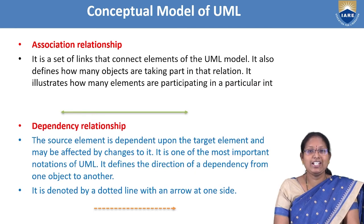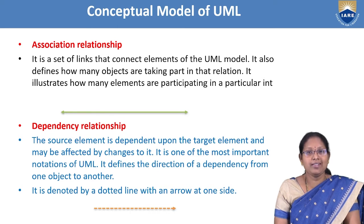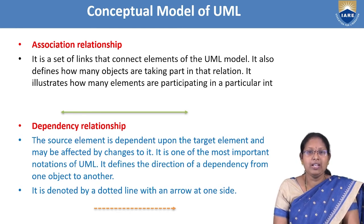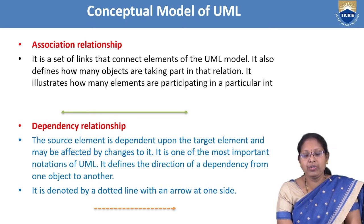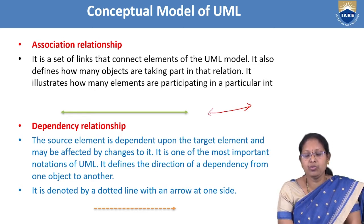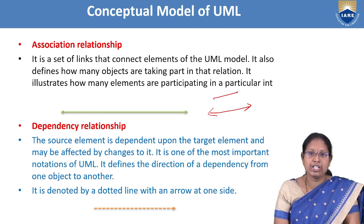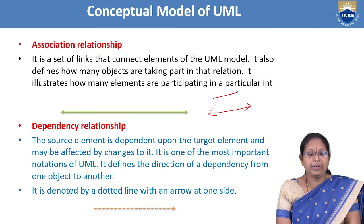The first is association relationship. It is a general structural relationship used to connect one concept to another. It is denoted by a solid line with optional direction arrows — bidirectional or unidirectional. It is a static relationship.